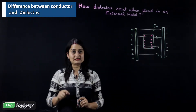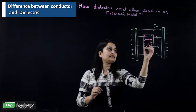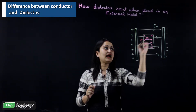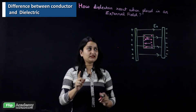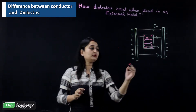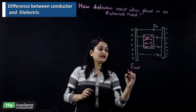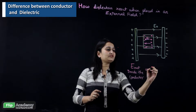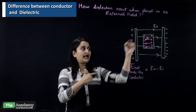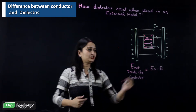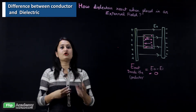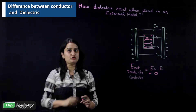The free electrons align towards the positive plate while the deficit of electrons creates positive ions toward the negative plate. This creates an internal electric field EI inside the conductor. The conductor's property is that this internal field is strong enough to cancel the external field. The net field inside the conductor is E₀ − EI = 0.